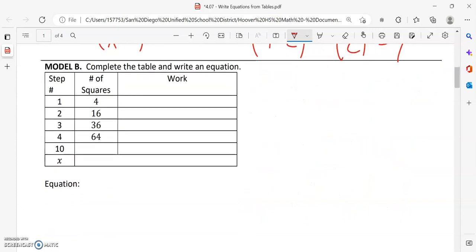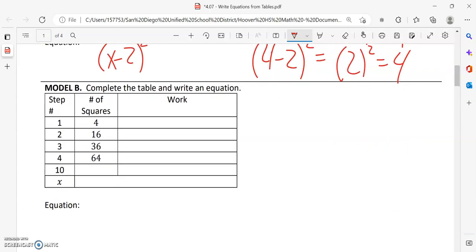All right, let's see here. So we are going from one to four, then from two to 16, three to 36, and four to 64. What I noticed, these are all perfect squares.